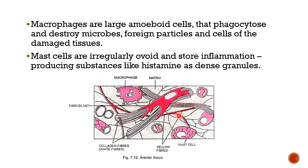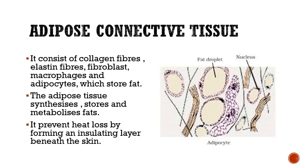In this image you can see three particular components: the matrix, which is the ground substance; the fibroblast, which produces collagen fibers (white fibers) and elastin fibers (yellow fibers); the macrophage, which phagocytoses foreign particles and microbes to protect our body; and the mast cell, which stores inflammation-producing substances like histamine.